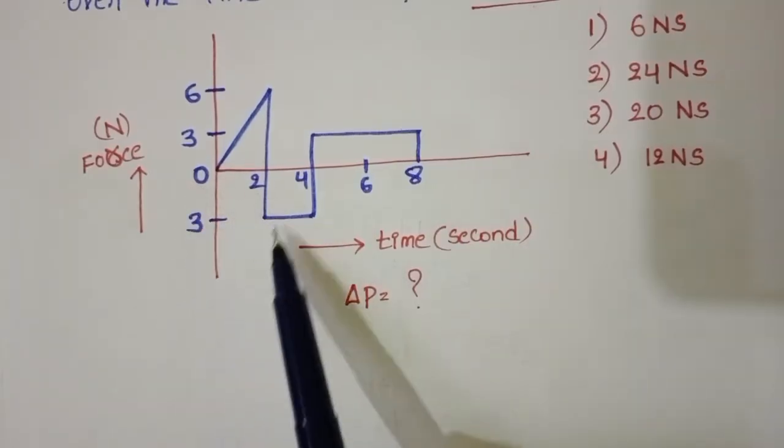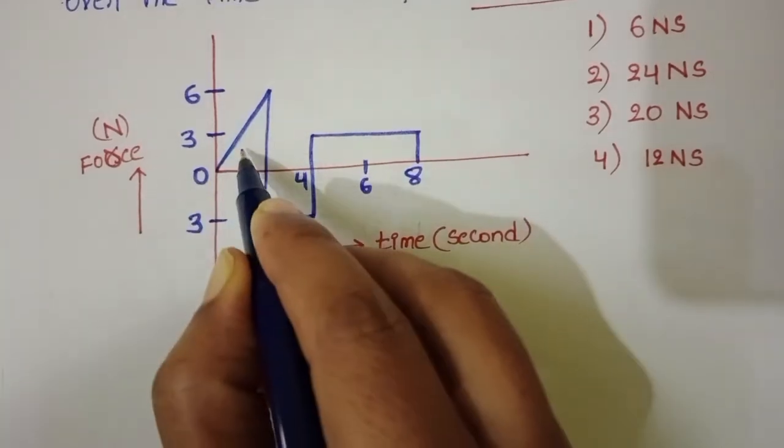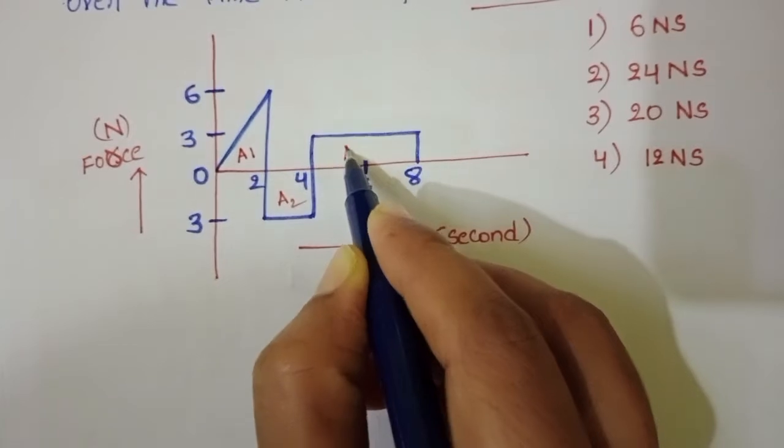Area of force and time graph gives the change in momentum. Let us take this area as A1, A2, and A3.